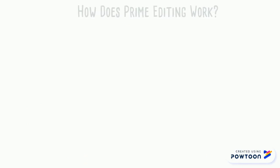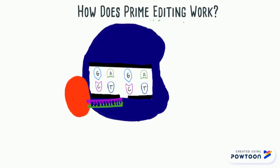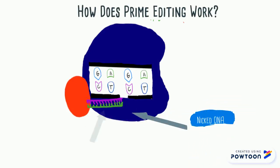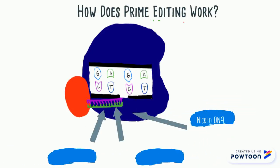Reverse transcriptase then reads the RNA sequence on the PEG RNA, which is the green strand, and then reverse transcribes the corresponding nucleotides to create a DNA sequence — the purple strand. The purple sequence is then appended where the DNA is nicked, which is where the gap is in the black strand.